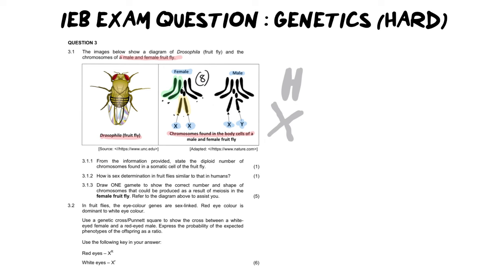So question one says, from the information provided, state the diploid number of chromosomes found in a somatic fruit fly. Well, we've already calculated and counted that. And that is going to be eight. Now, how did I know that? I simply counted it from the karyotype provided. And also remember, diploid means we haven't gone through any meiosis.